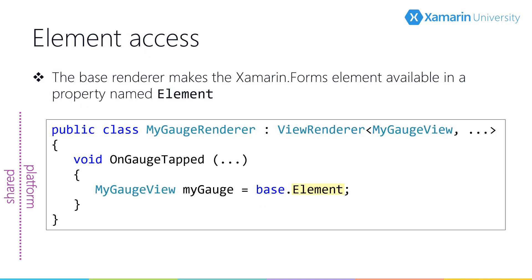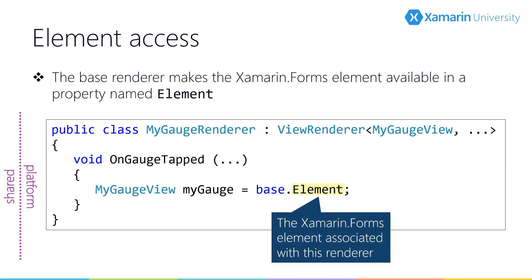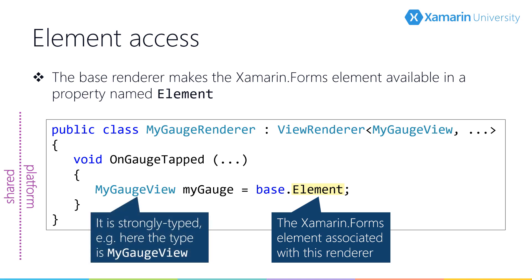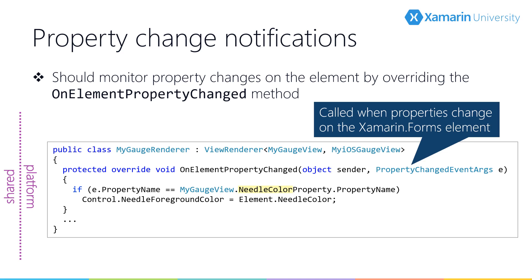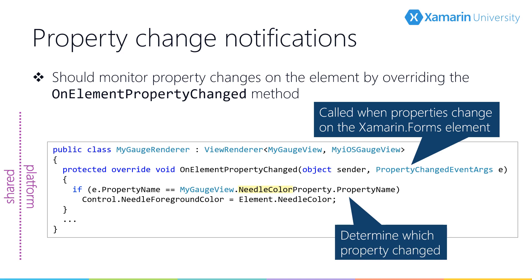The renderer also provides access to the instance of the Xamarin Forms element via the Element property, which is strongly typed and will match the type set in your class signature. We can also respond to property changes on the Xamarin Forms element. If your custom element defined bindable properties, when those properties are changed we can get notified by overriding OnElementPropertyChanged in the renderer. This method is called when the property is changed and is passed a PropertyChangedEventArgs containing a PropertyName. We would then access the updated property on the Element and apply any changes to the native control.